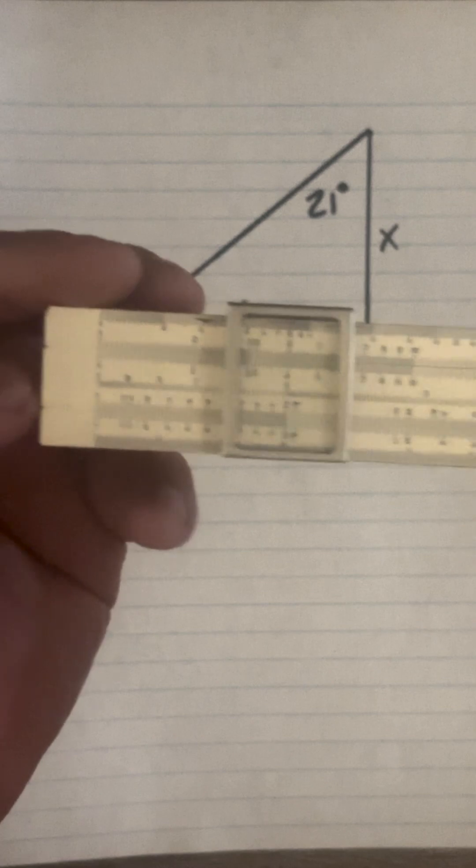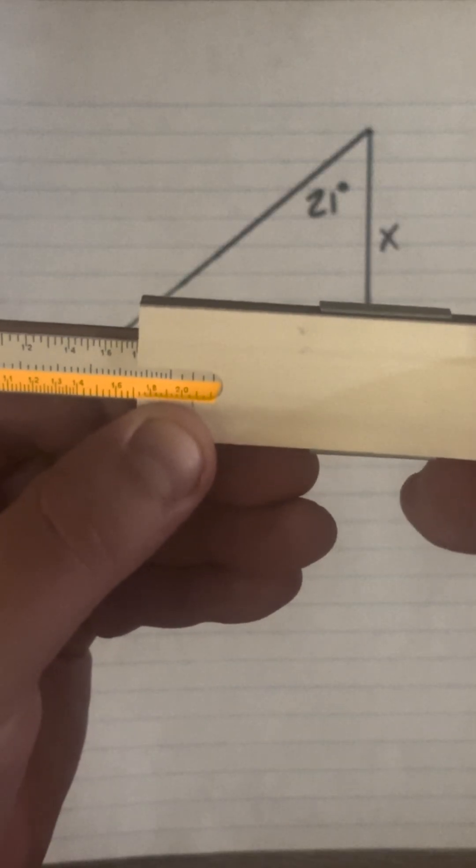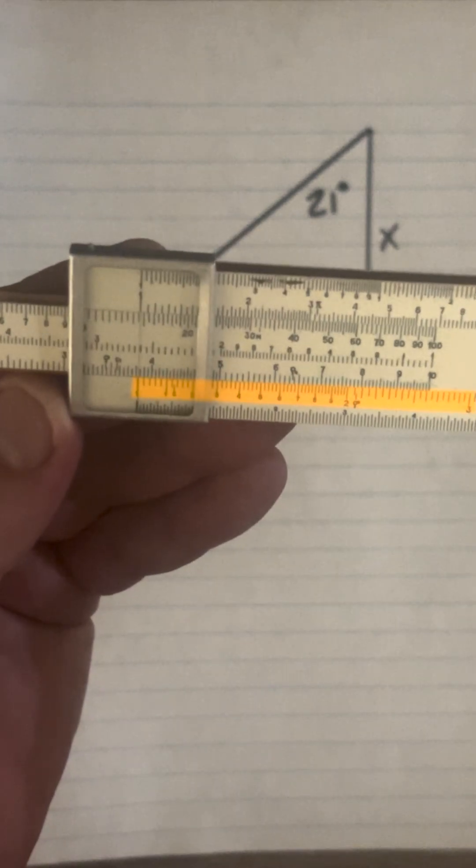So I'll take my slide rule, flip it over, and find 21 degrees on tangent right there. If I flip it back over, I'm going to move the slide over to the left index.